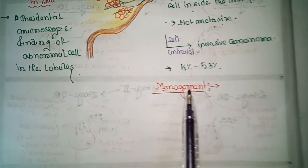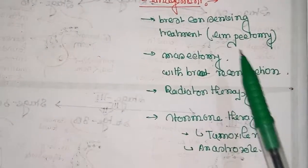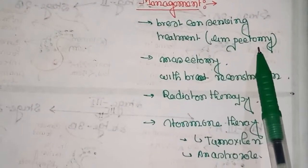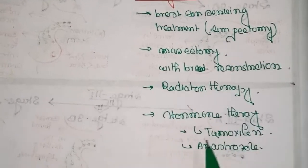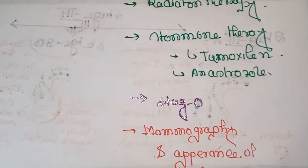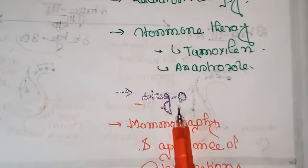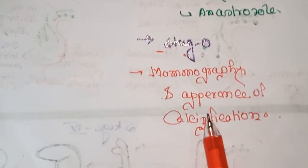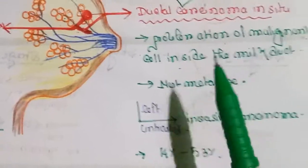Management of ductal carcinoma in situ can be controversial. Patients should discuss treatment options with their healthcare provider, including breast-conserving treatments like lumpectomy and mastectomy with breast reconstruction, radiation therapy, and hormone therapy like tamoxifen and anastrozole. Carcinoma in situ is considered breast cancer stage zero and is frequently manifested on mammography with the appearance of calcification.